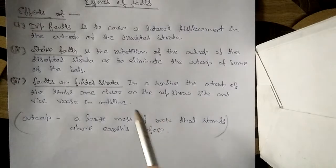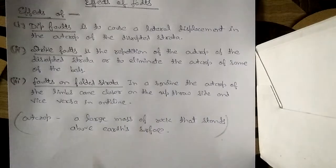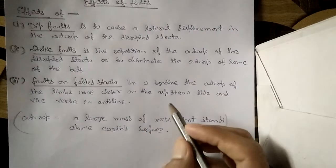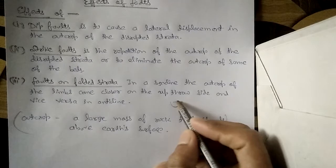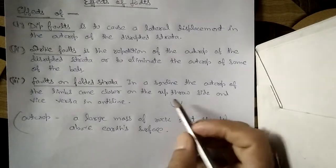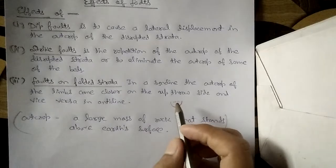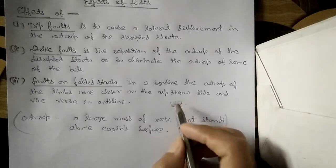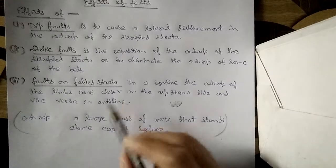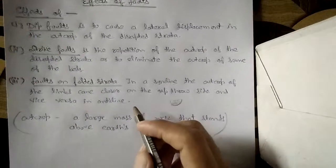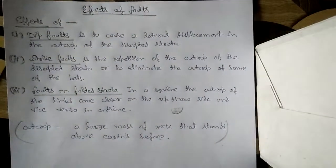The third topic is the effect of faults on folded strata. In a syncline, the outcrop of the limbs come closer towards each other on the upthrow side. In an anticline, the opposite of this happens. These are your notes on the effects of faults.